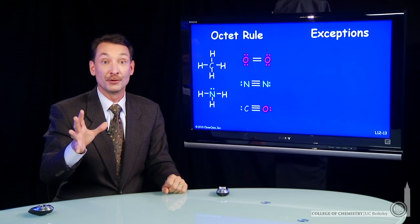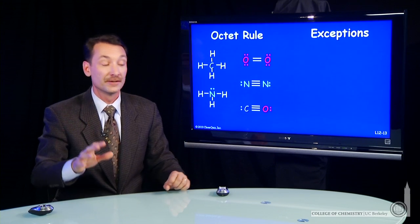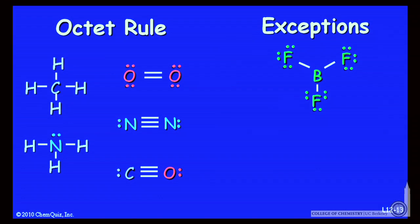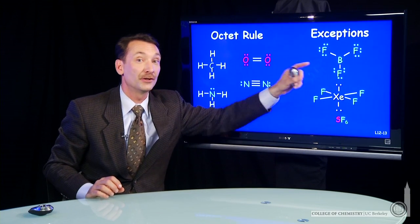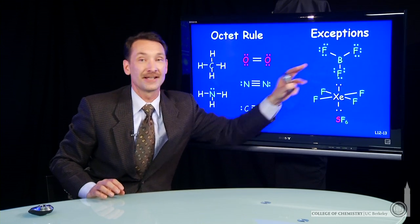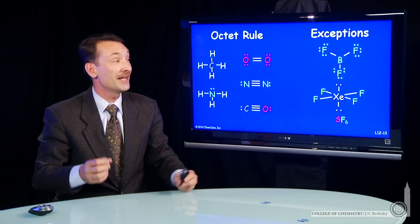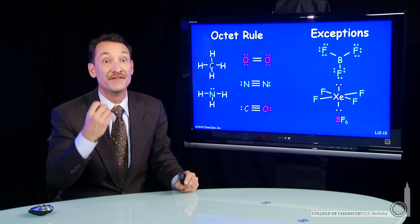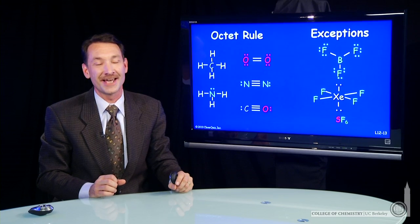Now, the octet rule is followed a lot of the time, but there are exceptions. For instance, here's boron trifluoride, which is electron deficient. The boron trifluoride molecule is relatively stable, but boron only has six electrons around it. But because it's not a stable octet, it turns out boron trifluoride as a molecule is very reactive. Boron is looking to fill its octet.